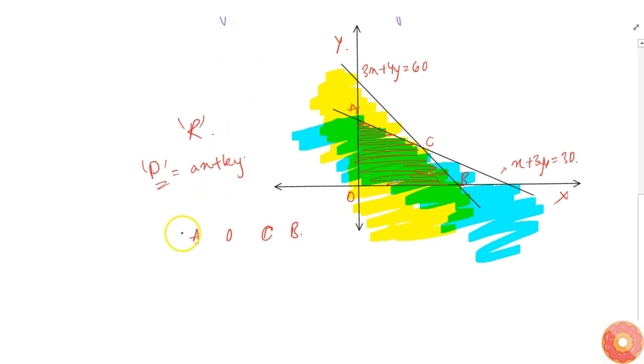At each point, let's note down what is the profit we get. Point A is 0 comma 10. Point C is the intersection of both lines: 3X plus 4Y equals 60 and X plus 3Y equals 30. If we make it three times, we get 3X plus 9Y equals 90. Subtracting, we get 5Y equals 30, so Y equals 6.